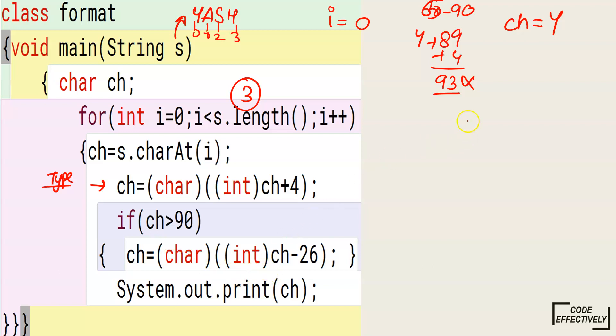ch equals ch minus 26. What will happen? Let's subtract this. It will be 93, and you will minus, let's see, 93 minus 26. It will be 1, and let's add 3 to it: 7, 1, and it will be 8. It will be 67.